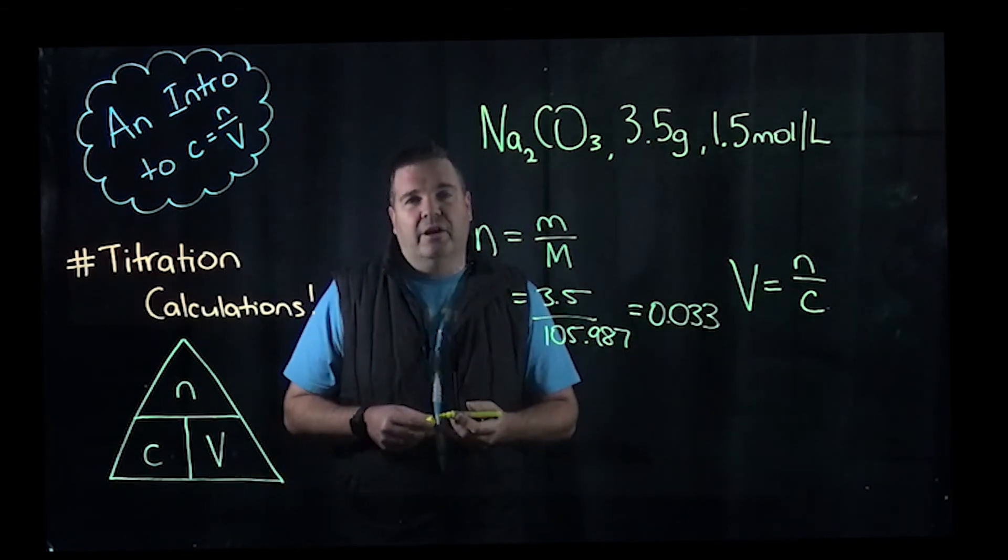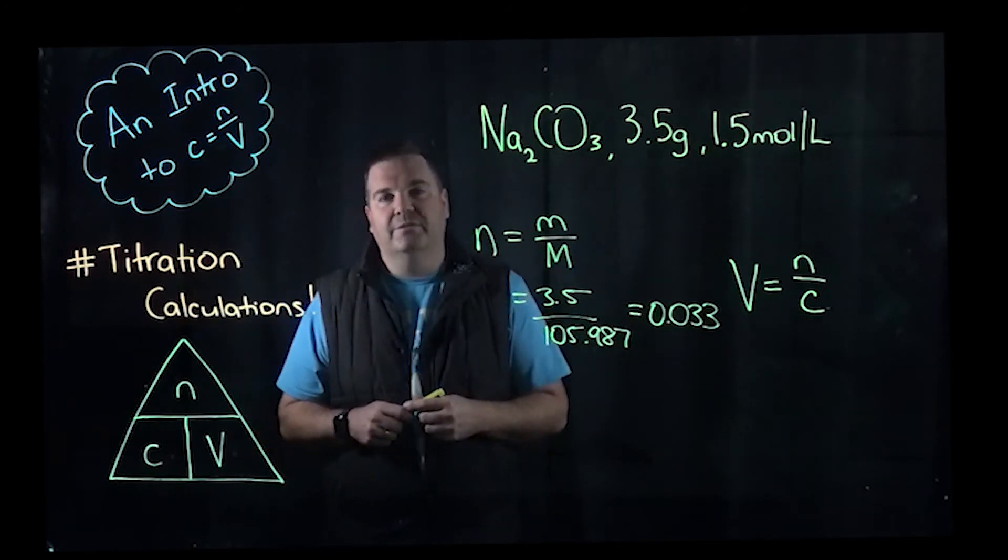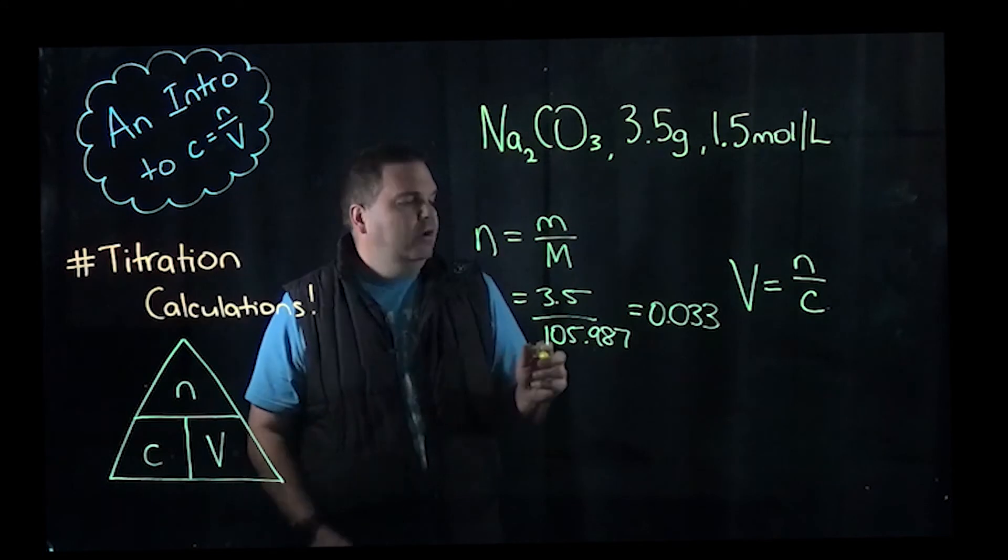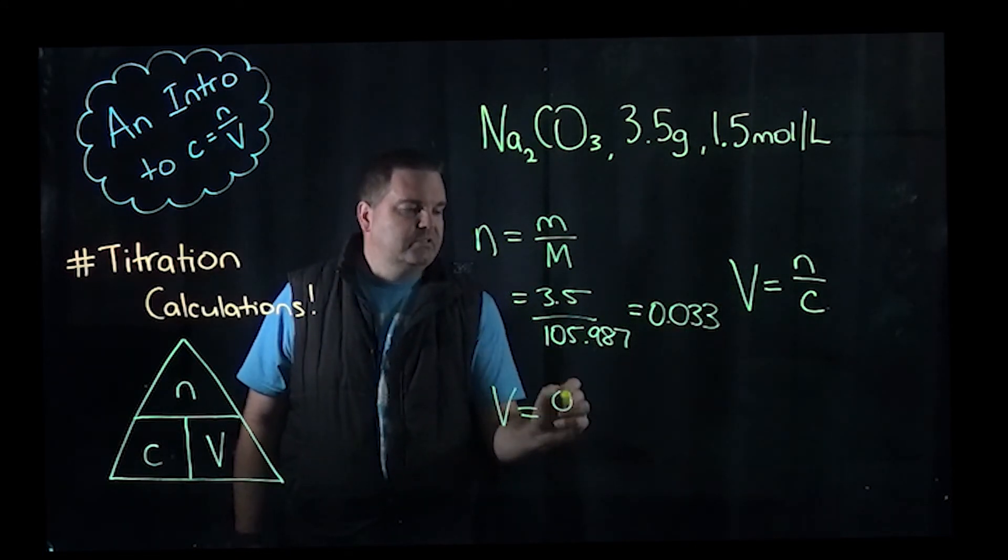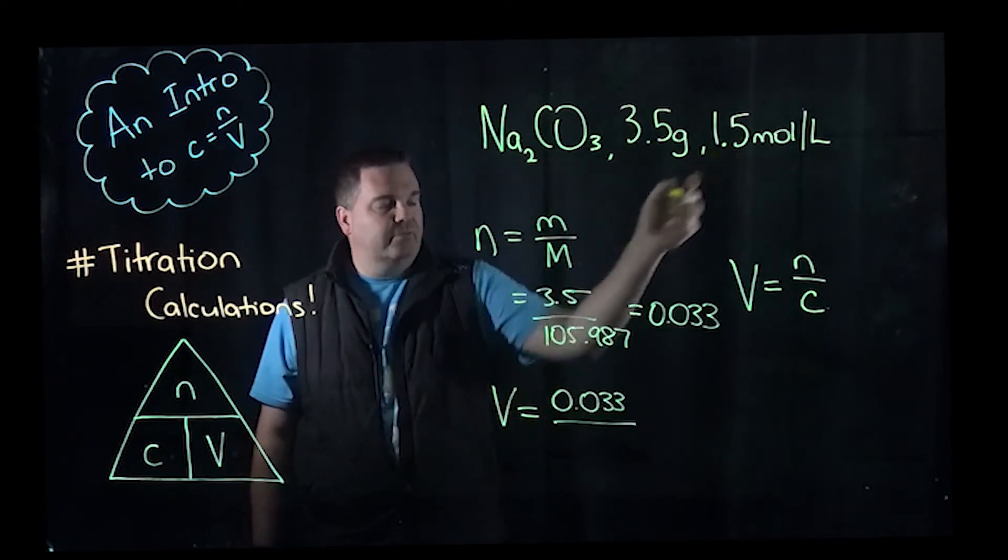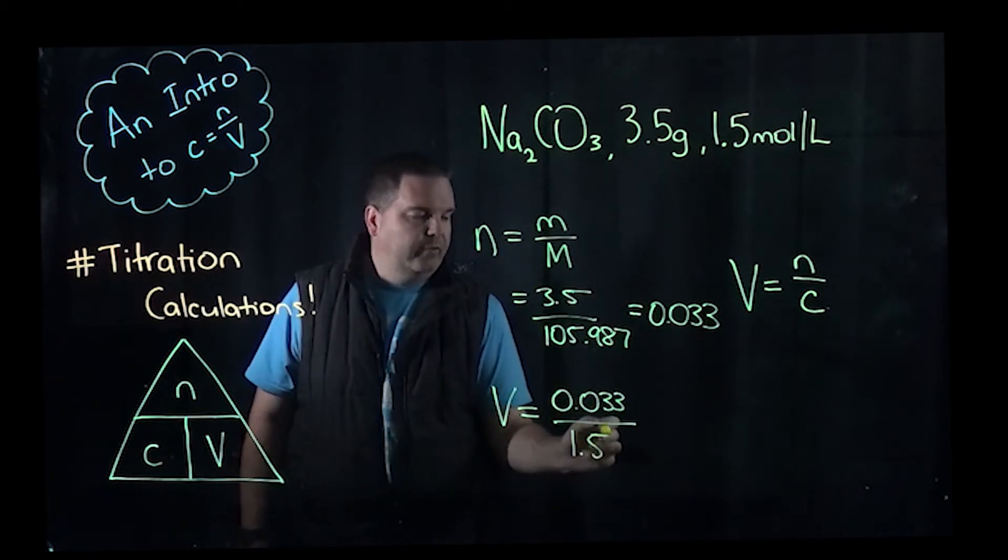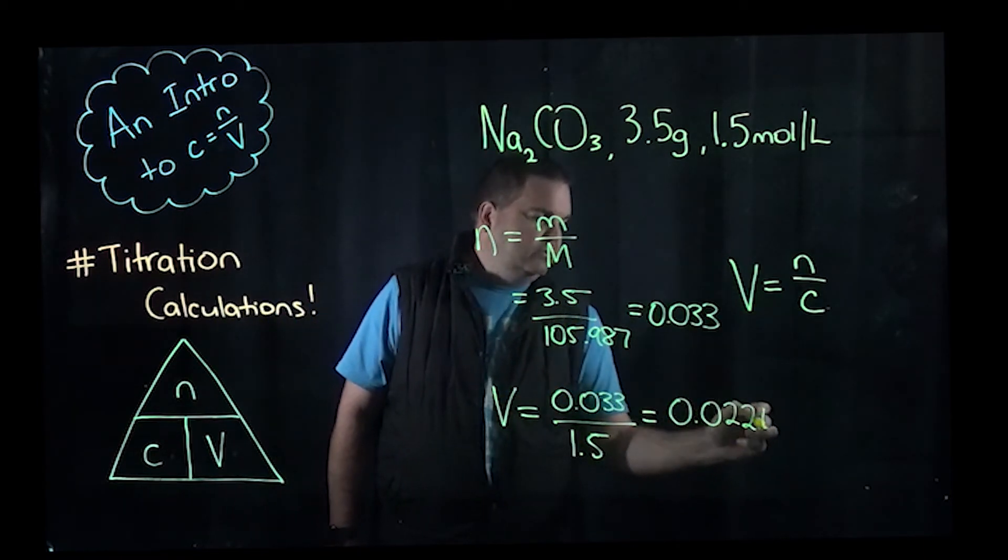Now, just by the way, in case you're wondering, I'm not a mathematical genius. I just have all my answers over on the side there, it's why I keep glancing sideways. But thank you if you thought I was that smart. So we use our equation now, volume equals number of moles, 0.033 over our concentration from up here, which was 1.5, and we're going to be able to get 0.022 litres.